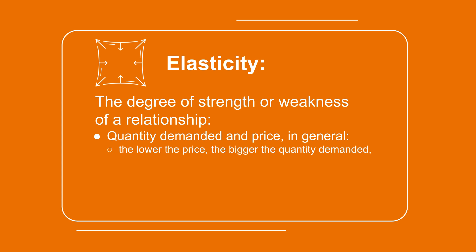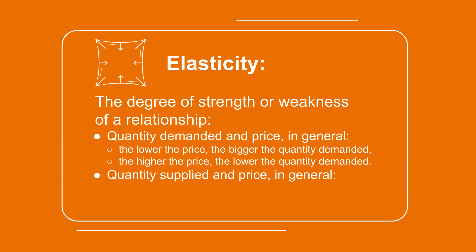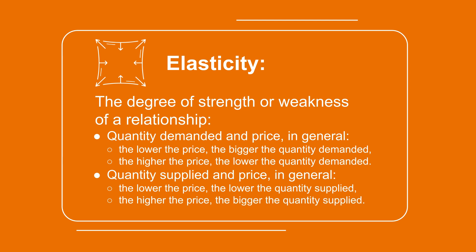In general, the lower the price, the bigger the quantity demanded. The higher the price, the lower the quantity demanded. Between quantity supplied and price: in general, the lower the price, the lower the quantity supplied. The higher the price, the bigger the quantity supplied.